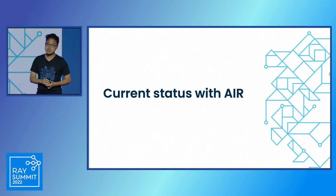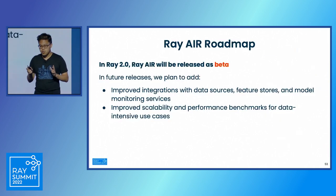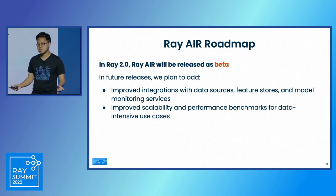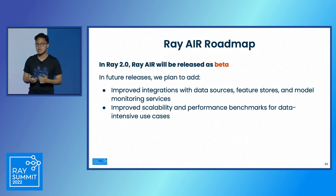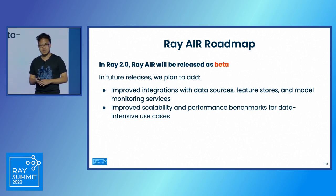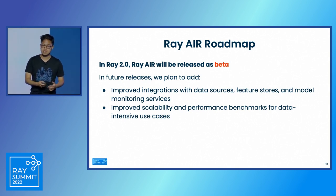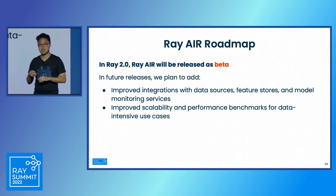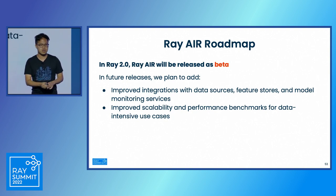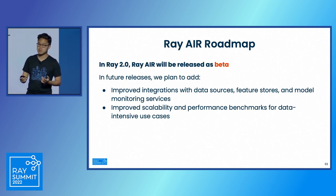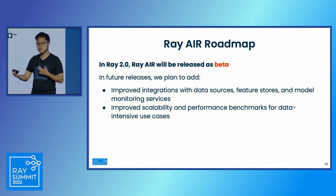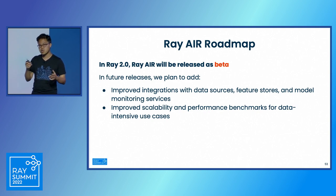Now we've covered how you can use Ray Air. With the current status, Ray Air is going to be released as beta in 2.0, which means you're all encouraged to try it out and let us know about feature requests or pain points. In future releases, we really plan to focus on improving our integration story — providing out-of-box integrations with data sources, feature stores, and monitoring services, and also improving data-intensive workloads in terms of scalability, performance, and reliability. This roadmap is currently flexible, so if you have anything you'd love to see in Air or any workload you'd love to integrate or contribute, we'd love to talk to you.